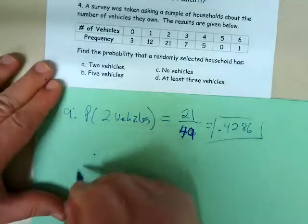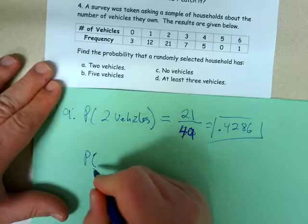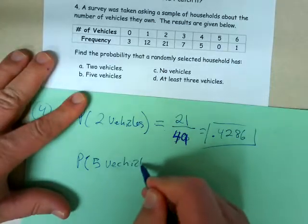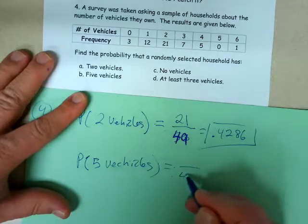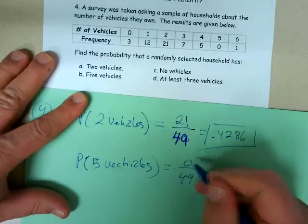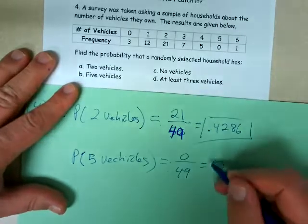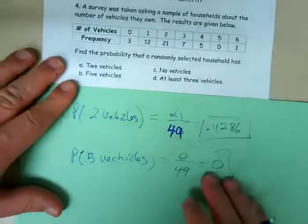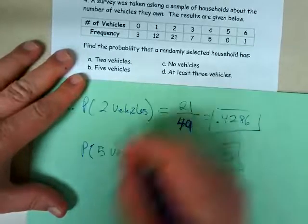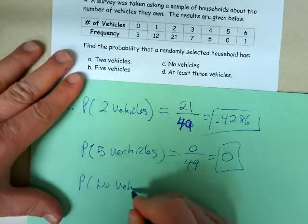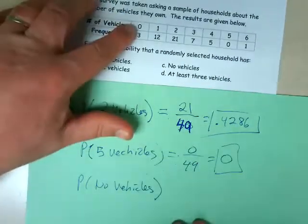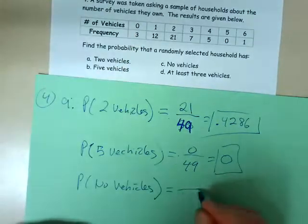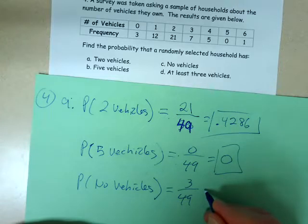What about the probability of five vehicles? Out of the 49 households, none of them have five vehicles — zero — so the probability is zero. It's impossible. What about the probability of no vehicles? There are three households that have no vehicles, so out of the 49, that's three with no vehicles.